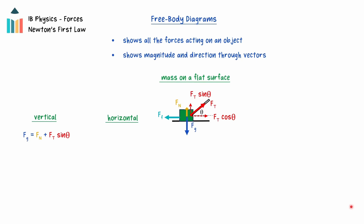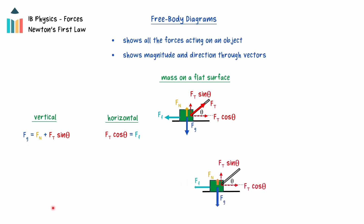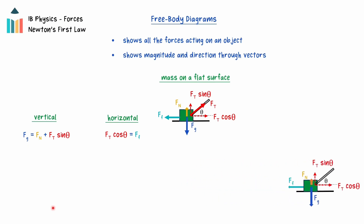In the vertical dimension, there are three forces acting. The force of gravity is acting down. The normal force and the vertical component of the tension force are acting upwards. So the magnitude of the force of gravity must equal the sum of the normal force and the vertical component of the tension force. In the horizontal dimension, the horizontal component of the tension force is balanced by the force of static friction. It's important to note that the forces are also balanced for an object moving at a constant velocity. The net force is zero in both cases.